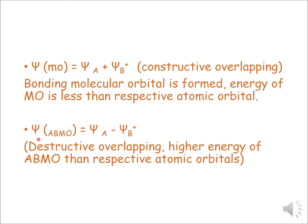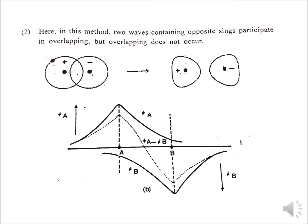Now we will see the anti-bonding molecular orbital. Anti-bonding molecular orbitals are formed by destructive overlapping. In destructive overlapping, ψ_anti-bonding = ψ_a − ψ_b+. Destructive overlapping gives higher energy to the anti-bonding molecular orbital than the respective atomic orbitals. Since energy is higher, stability is less. When opposite signs overlap, no constructive overlapping occurs.